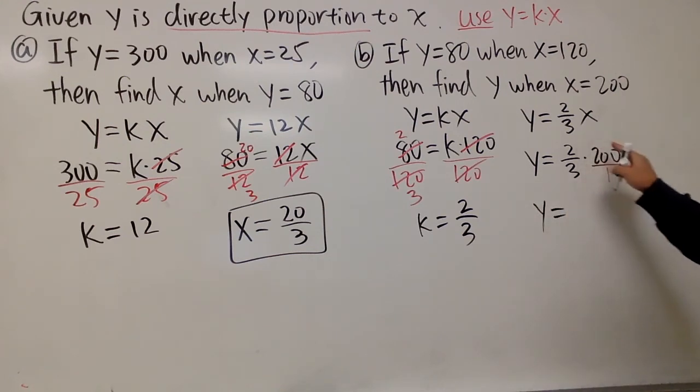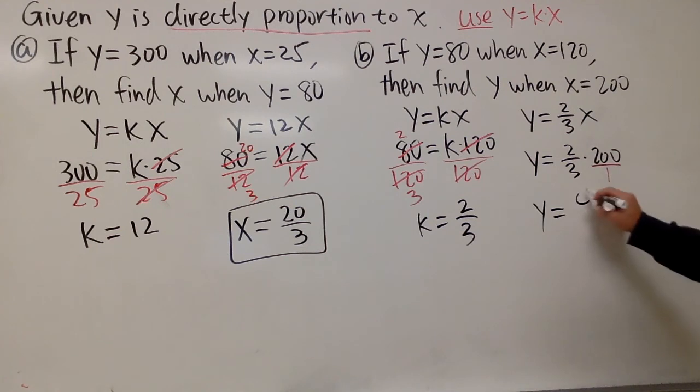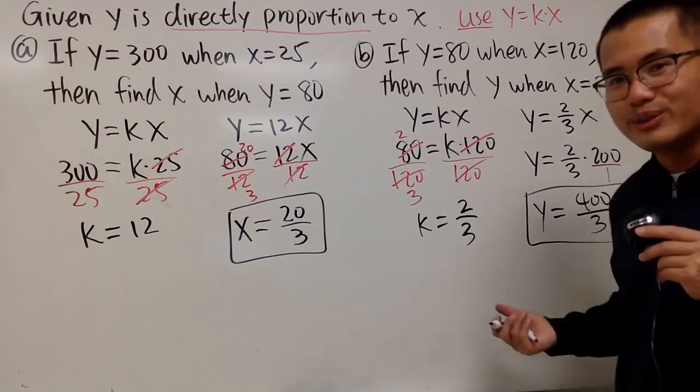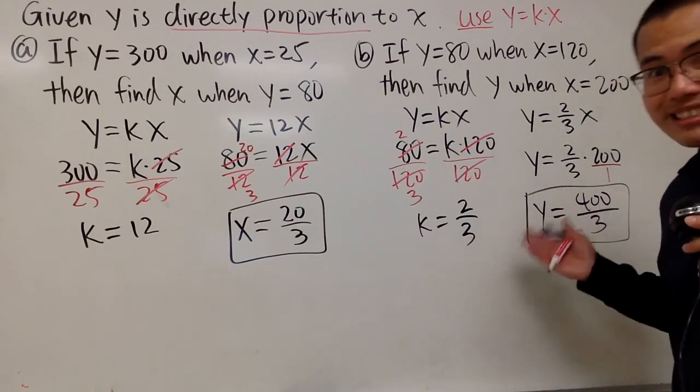So finally, 2 times 200 is 400, and then 3 times 1 is 3. So final answer is y equals 400 over 3, just like this. And yes, that's it.